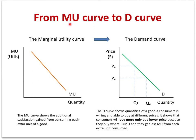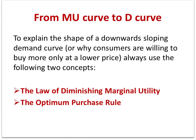Finally, moving from the marginal utility curve to the demand curve: the marginal utility curve slopes downwards, showing that as consumers consume more of a good they get less extra satisfaction from each additional unit consumed. The demand curve also slopes downwards and shows the relationship between price and quantity demanded. In conclusion, to explain the shape of a downward sloping demand curve, or to answer why consumers are willing to buy more only at a lower price, always use two concepts: first, the law of diminishing marginal utility, and second, the optimum purchase rule.